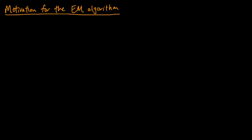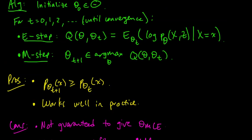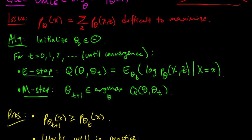In the previous video, I gave a very abstract introduction to the EM algorithm, the expectation maximization algorithm. But it was sort of unmotivated — I didn't really explain why you might choose to do that particular procedure. Why this conditional expectation and why the log of this joint distribution? When I was first trying to understand the EM algorithm, it was very befuddling as to why you would follow this procedure. Why does it make sense and why does it work?